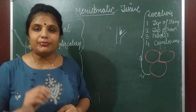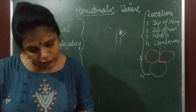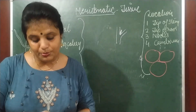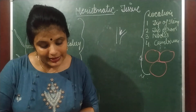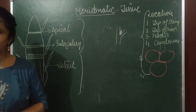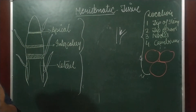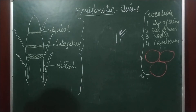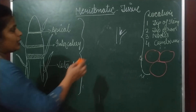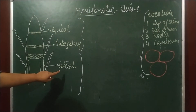Apical meristematic tissue is present on the root tip or shoot tip. Intercalary meristematic tissue is present on the nodes and is responsible for the number of branches. In your book, certain locations are given — for example, at the base of the leaf in pine, and at internodes in grasses. Please learn all these examples. Intercalary meristematic tissue is the only tissue that is entirely converted into permanent tissue.